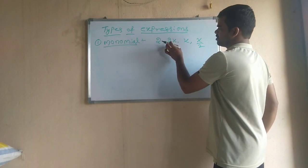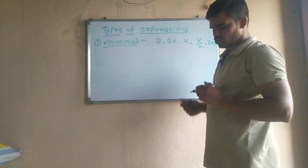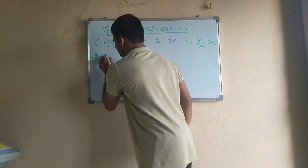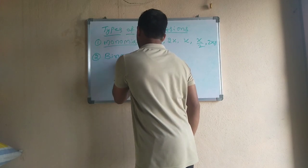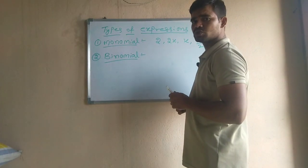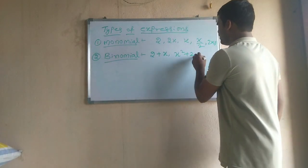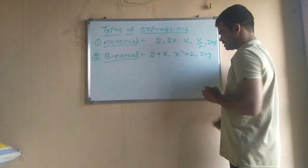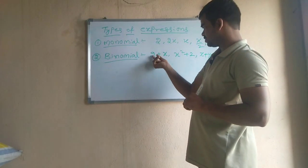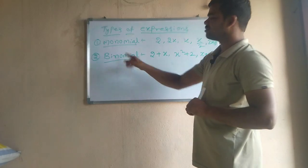Examples of monomials: 2 is a monomial, 2x is a single term, x, x by 2, and 2xy are also monomial expressions. Next, we have binomial expressions. Binomial means two, so if we have two terms in the expression, those are called binomial expressions. For example, 2 plus x — here 2 is a term, x is a term, separated by a plus symbol, so it is a binomial expression.